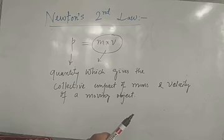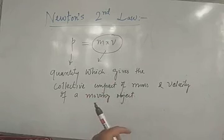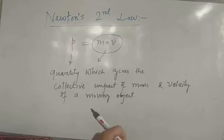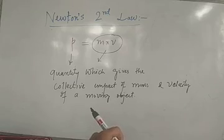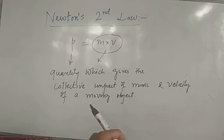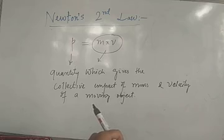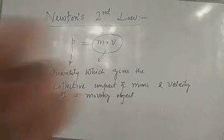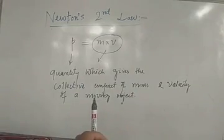We have seen that an object at rest does not possess any sort of momentum. In other words, the momentum is always associated with moving objects. Objects at rest or stationary objects have nothing to do with momentum. So when an object is in motion, the overall impact of its mass as well as velocity is given by a quantity which we call as momentum. Today we are going to study Newton's Second Law.